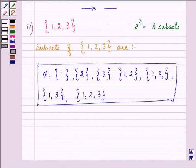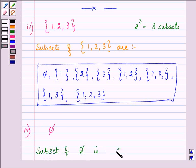Proceeding on with the last and final part, we are given φ. This given set is a null set having no elements. Hence, the only subset of φ is φ only.